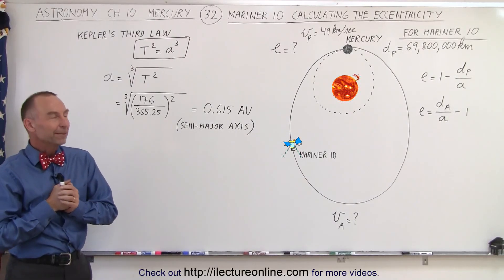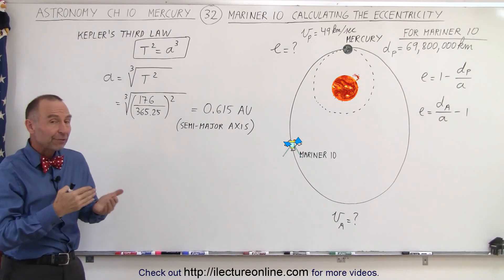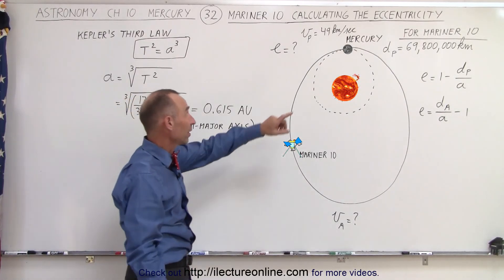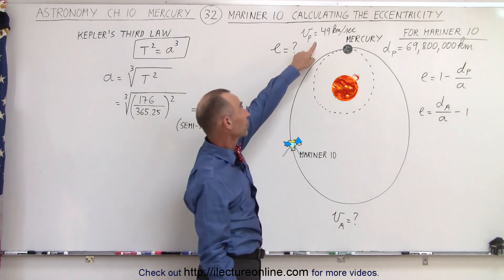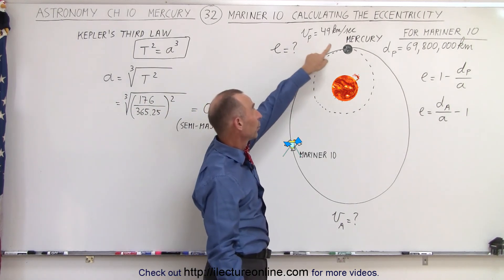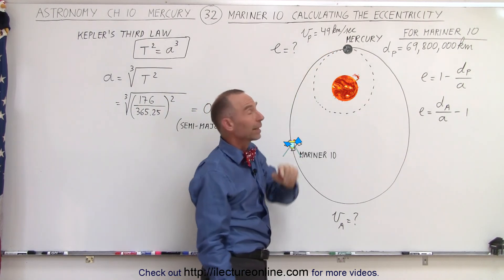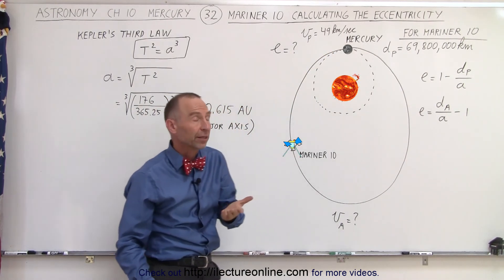Welcome to our lecture online. In the previous video, we established that the velocity of Mariner 10, when it reached Mercury, was about 49 km per second.